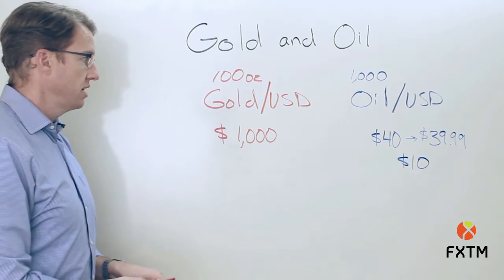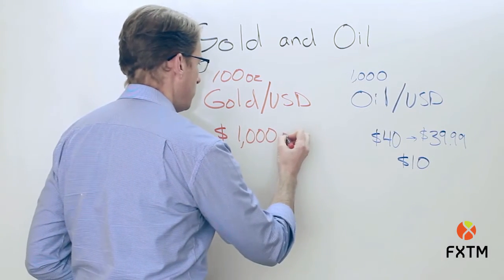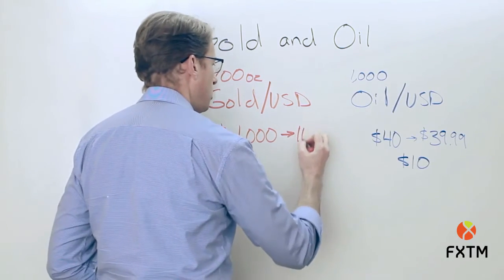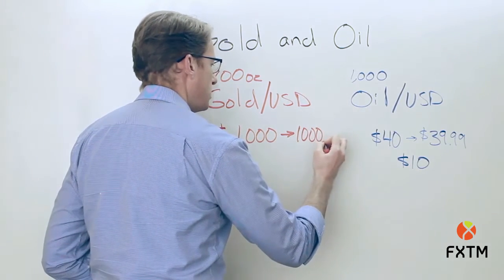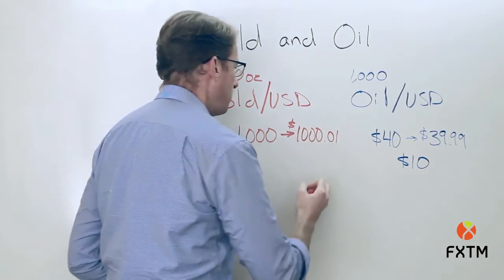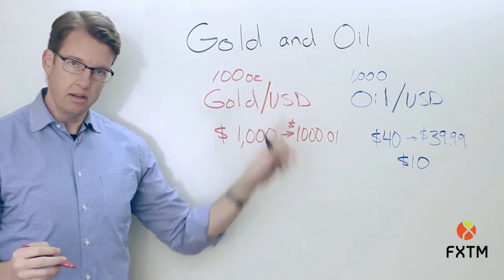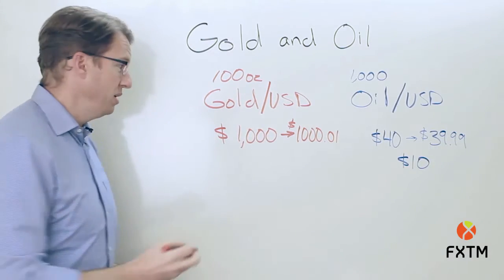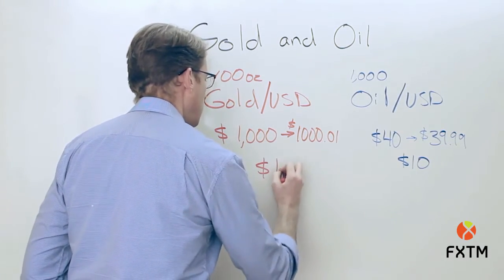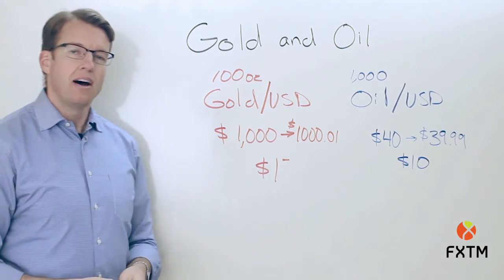Over here for gold, if prices improve to a thousand dollars and one cent — up by one cent — we take that one cent times one hundred ounces, which means that improvement is worth one dollar to the long side, or adverse to the short side by one dollar.